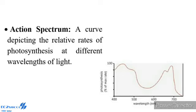However, sufficient photosynthesis also occurs in the middle part of the light spectrum where carotenoids are active. The first action spectrum was studied by T.W. Engelmann in the year 1882.